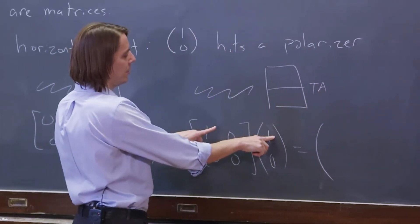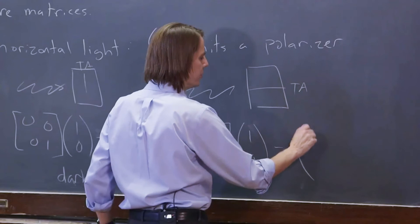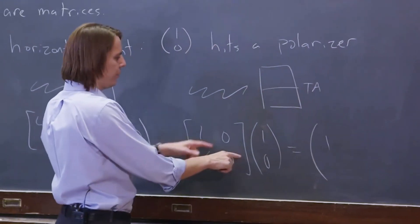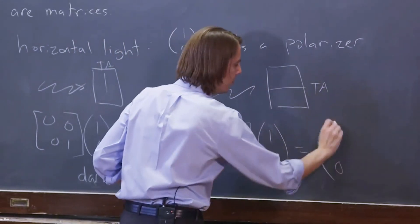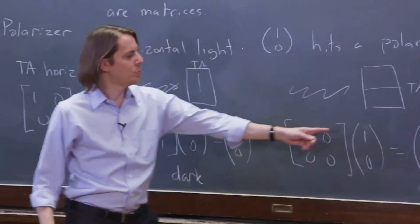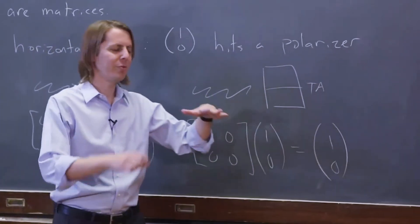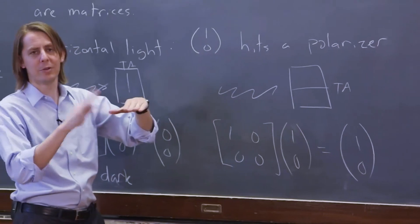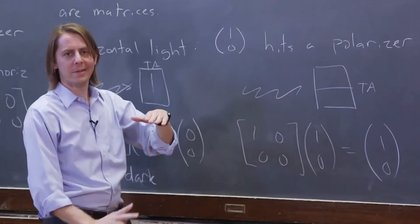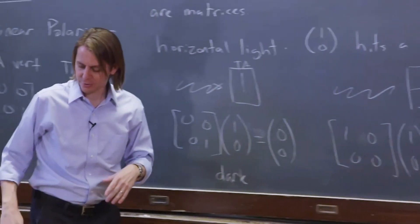1 times 1 is 1, plus 0 times 0 is 0, so that's 1. Then 0, 0 gives you 0. You put in horizontal light and got out horizontal light. If we send horizontal light through a horizontal polarizer, it just goes right through. The high absorbance is in the other direction.